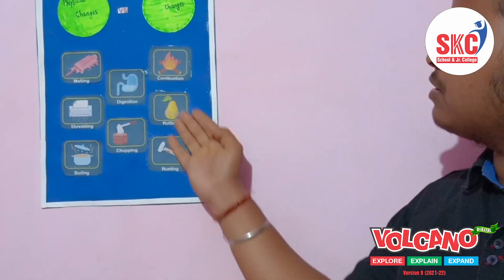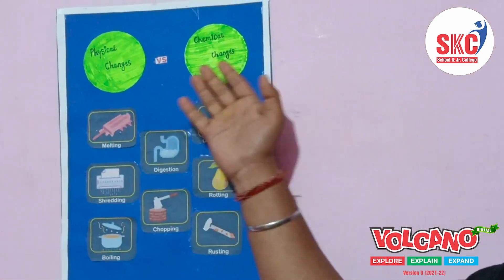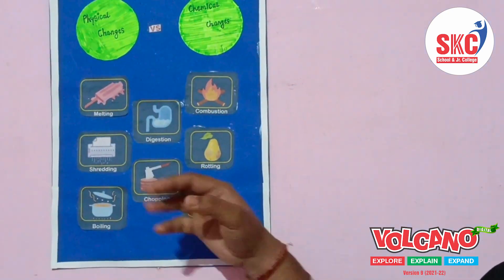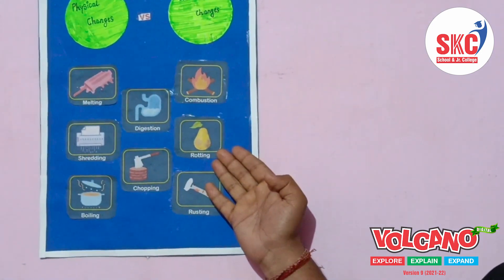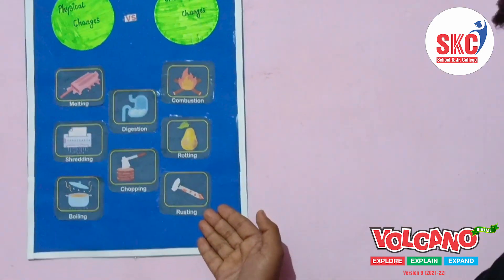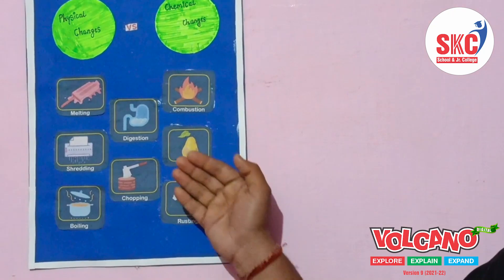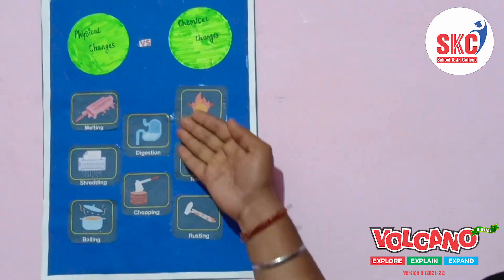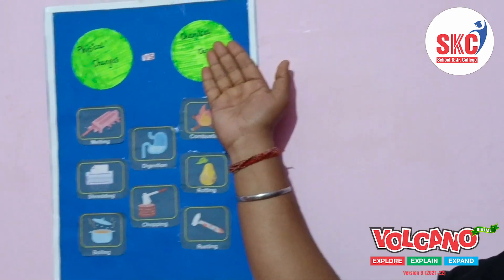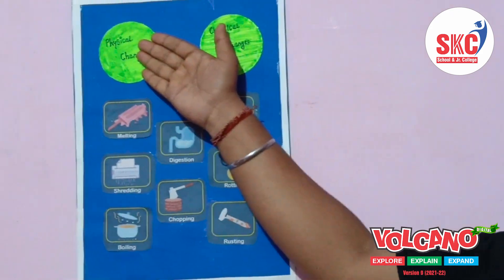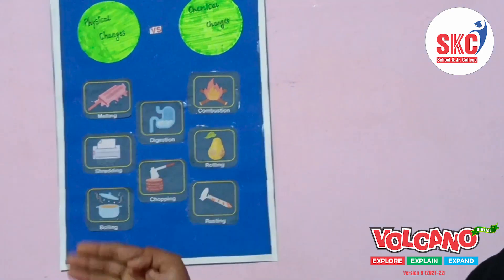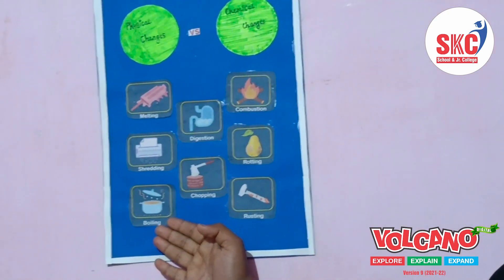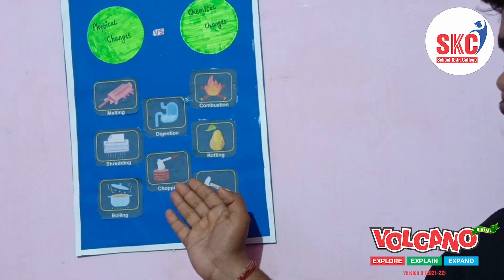These are some examples of physical changes and chemical changes. As you can see, combustion, rotting of fruit, rusting of a nail, and digestion of food are examples of chemical changes. In physical changes, there is melting of ice, shredding of paper, boiling of water, and chopping of fruit or vegetables.